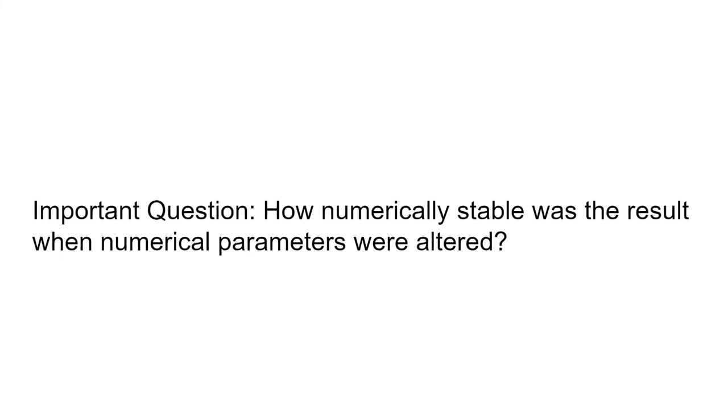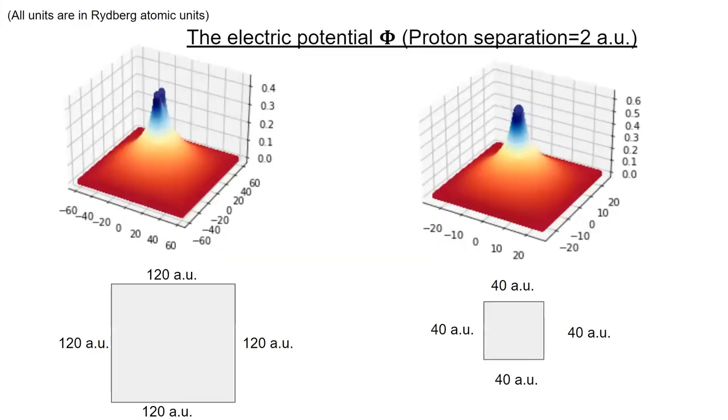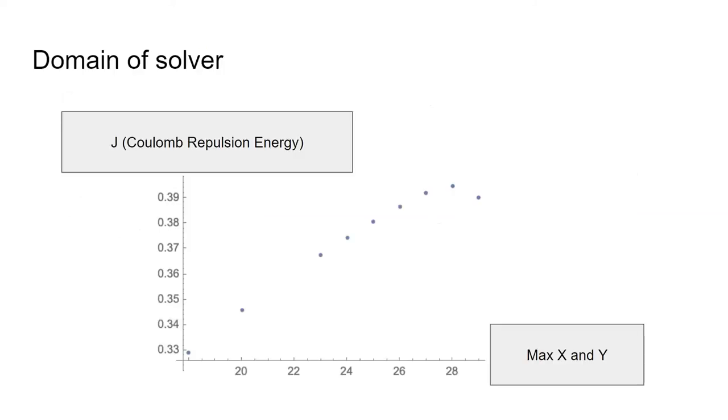But with any numerical algorithm, it's important to not just look at the final results, but also ask about the process, how stable were the results in terms of various numerical parameters. One of these numerical parameters is the domain that we solve our partial differential equation on. Notice that when we solve the Poisson equation from negative 60 to 60 and negative 20 to 20 in x and y, we get very different results for the electric potential.